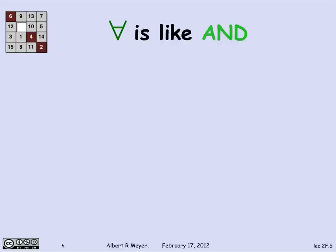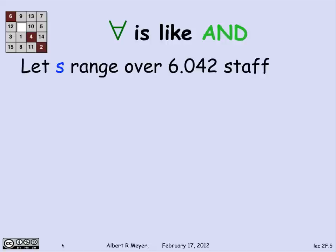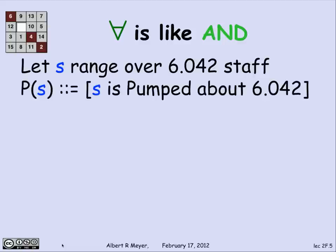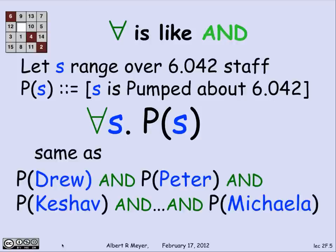The upside down A, for all, acts like an AND. Let's let a variable s range over the staff members in 6042, of whom there are about 30. Let's define a predicate P(s) that says that s is pumped about 6042. If I tell you for all s P(s), that's exactly the same as saying that P(Drew) is true, and P(Peter) is true, and P(Keshav) is true, and a whole bunch more ands down to P(Michaela).